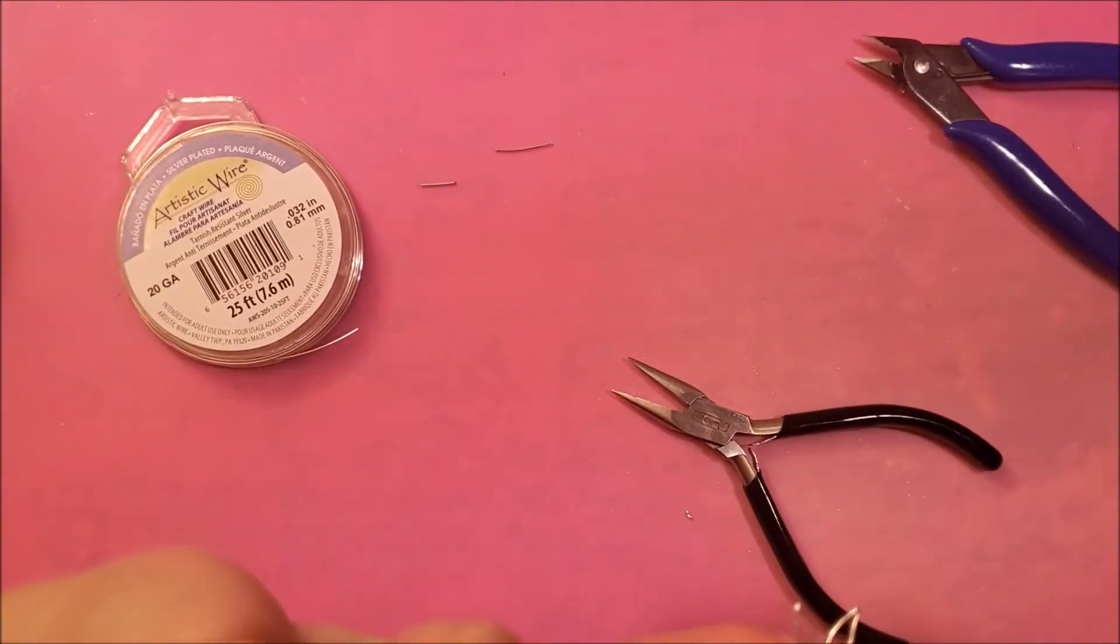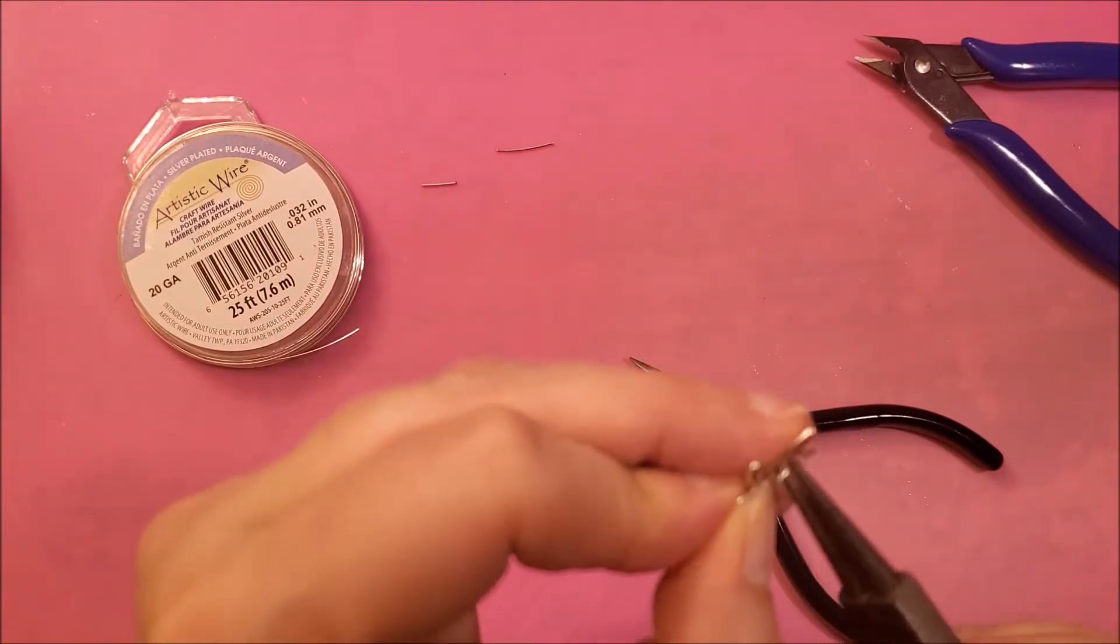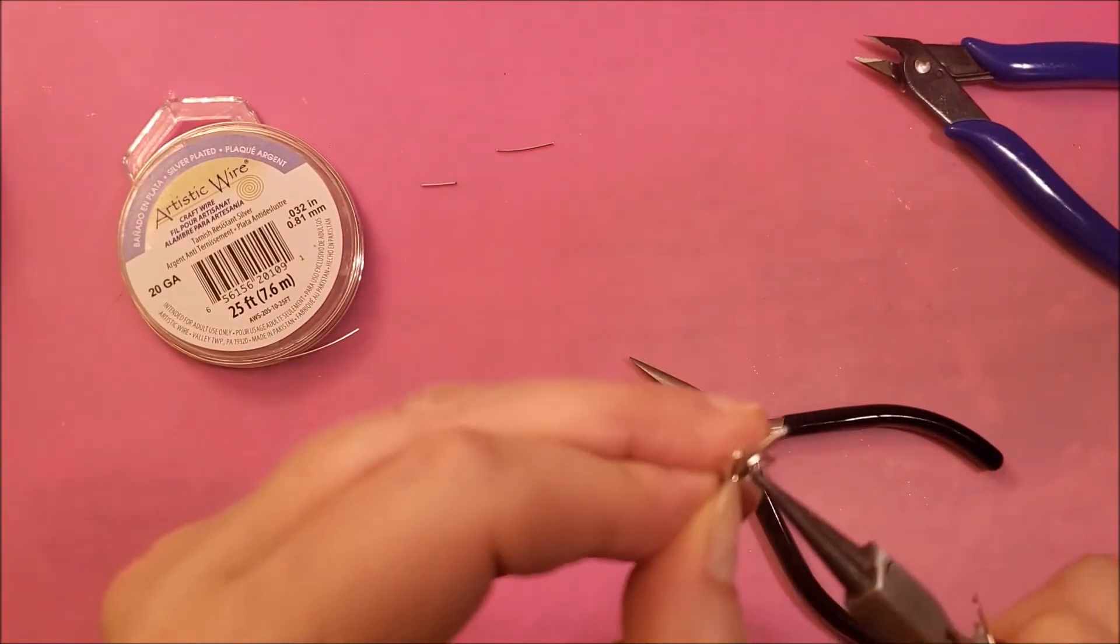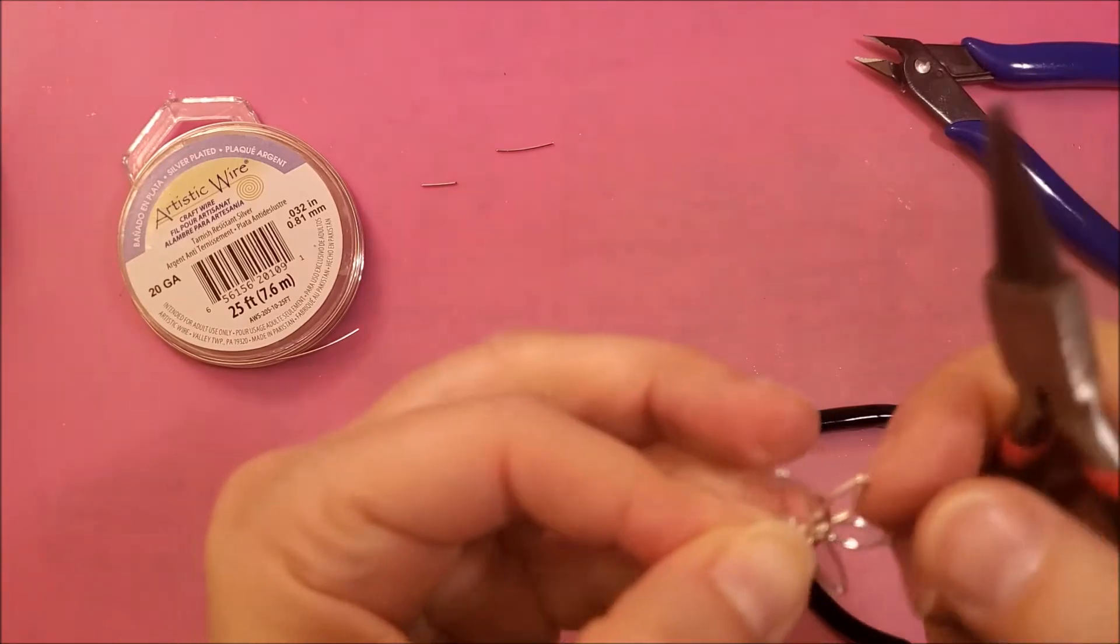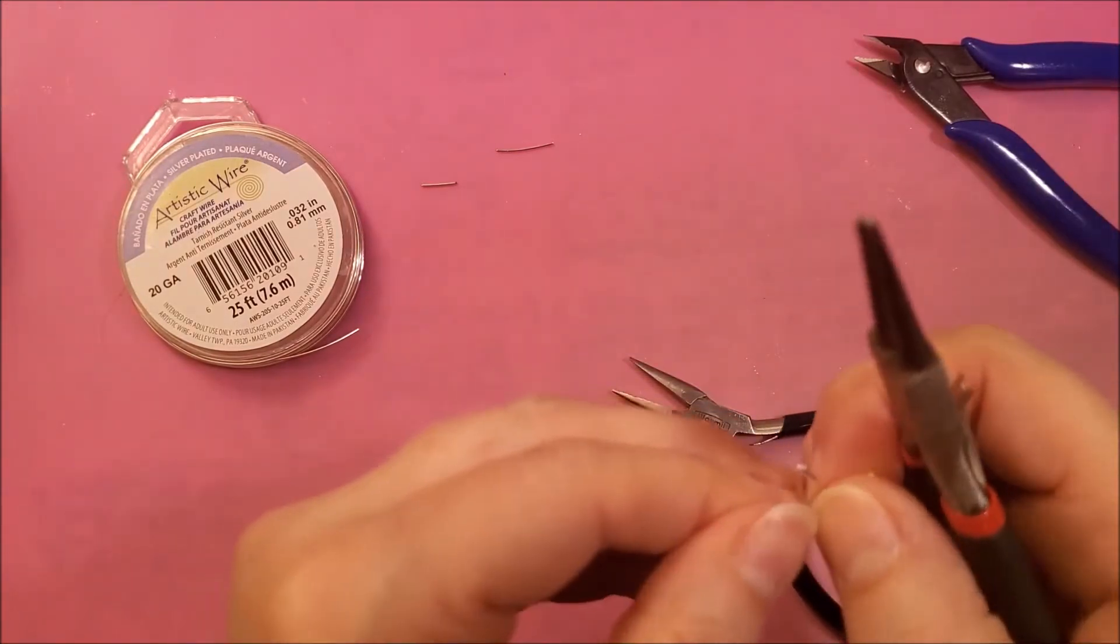With your round nose pliers we're just going to make a little loop. Now as you can see I probably could have cut a little less, so to shorten it we'll just clip off the end.